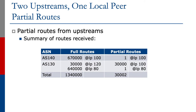The outcome of this: if the link to AS 140 fails, with partial routes it's just a default route that is withdrawn from the local BGP table. The whole network will fail over to the AS 130 link very, very quickly — in a matter of seconds. And same goes the other way around: if the AS 130 link fails, the 30,001 prefixes learned from AS 130 will be quickly removed, and the default route from AS 140 will carry the traffic.